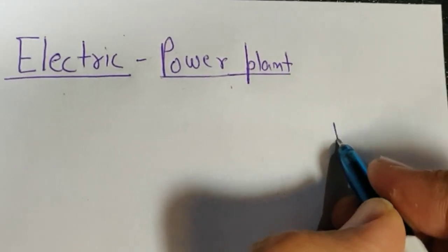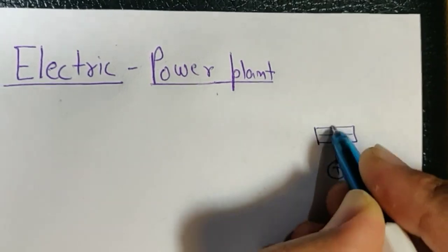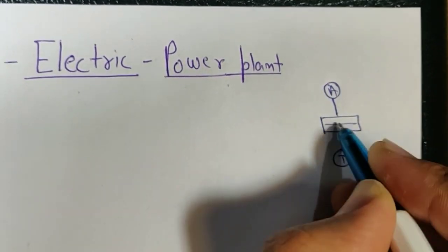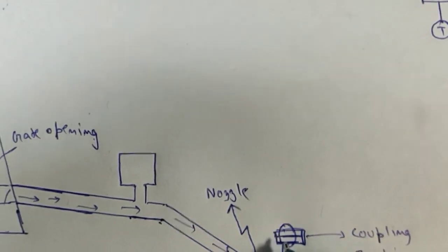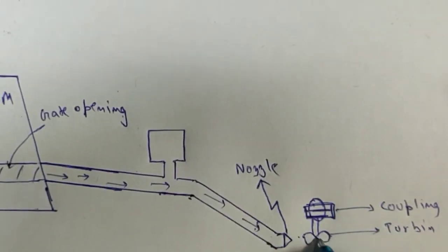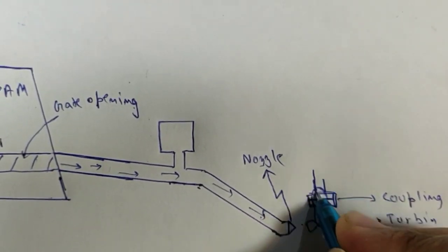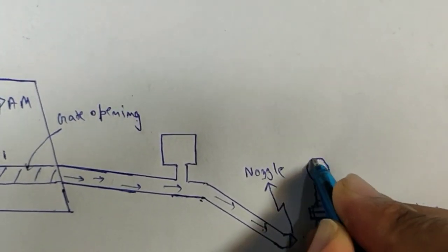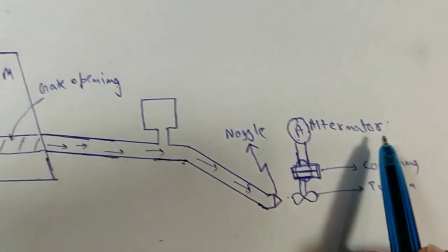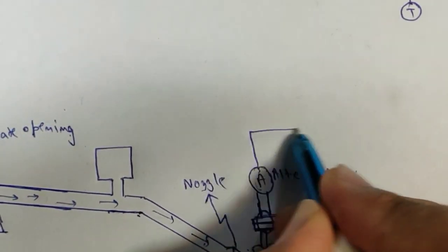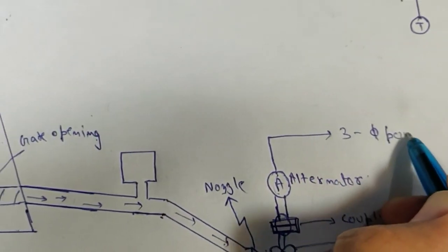The turbine is coupled with the alternator using a coupling. So this is our turbine, coupled with our alternator.